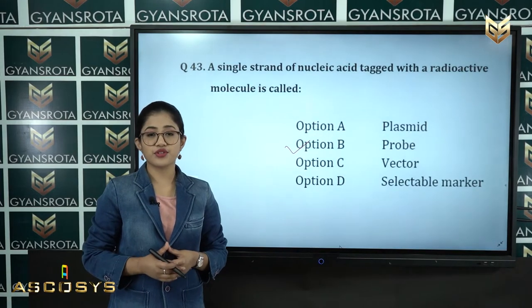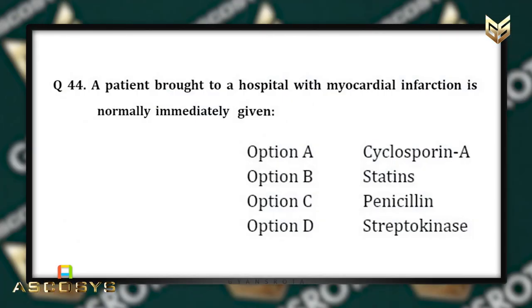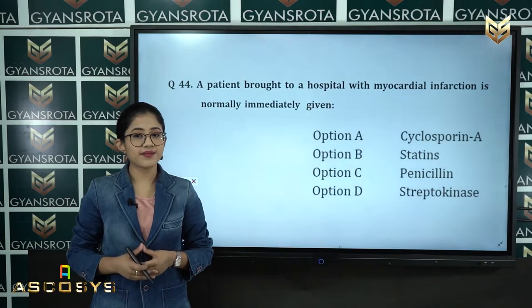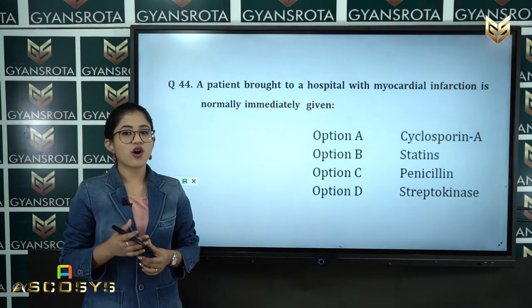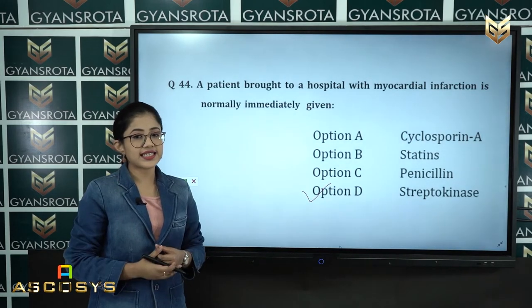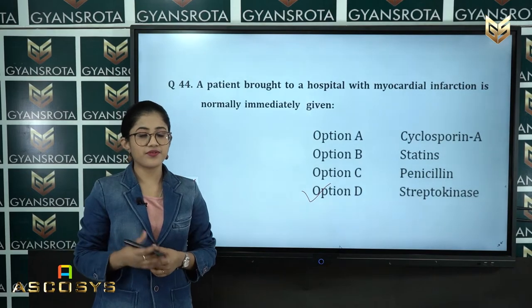Question 44: A patient brought to a hospital with myocardial infarction is immediately given option A: Cyclosporine A, option B: Statin, option C: Penicillin, option D: Streptokinase. The correct answer is option D, Streptokinase, from the chapter Microbes in Human Welfare.